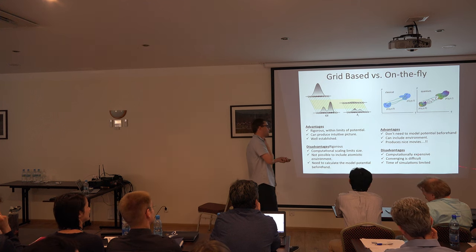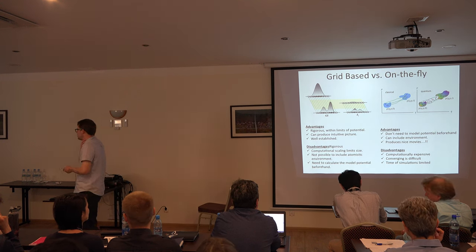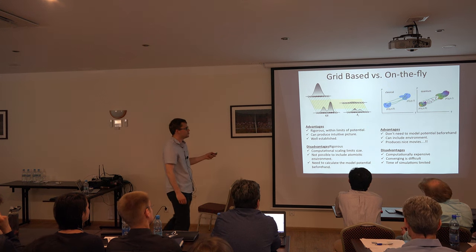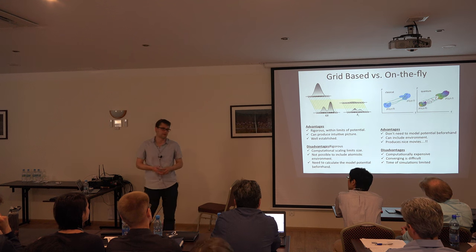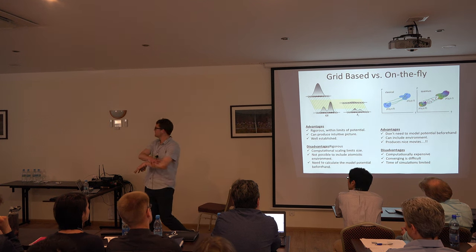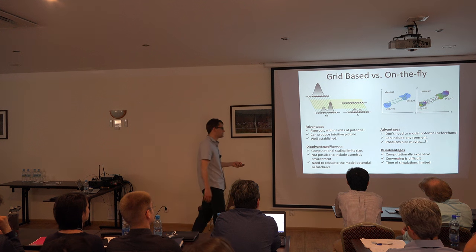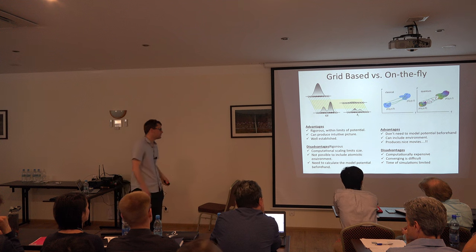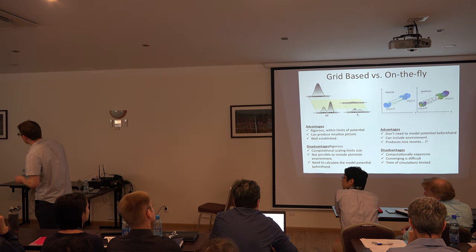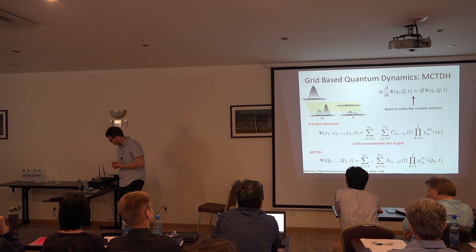Disadvantages: this is still a very computationally expensive method. Don't think that by switching from grid-based to on-the-fly you're making your life easy and computationally cheap. You're making the nuclear motion cheaper, but in some ways the quantum chemistry is actually becoming harder — so essentially you're replacing one problem but putting in another. It's about knowing what approximations you can get away with. Converging is difficult. The simulation times also tend to be limited — if you have a model that accurately represents your system, it's possible to run dynamics for picoseconds or nanoseconds, whereas with on-the-fly dynamics, femtoseconds is generally still the limit.